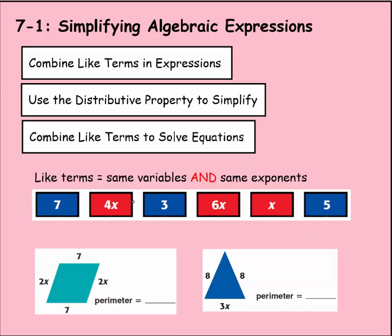And when you have like terms, you can combine. Just like you know that you can add 7 plus 3 and that would give you 10, you can combine this 7, 3, and 5 to give you 15.